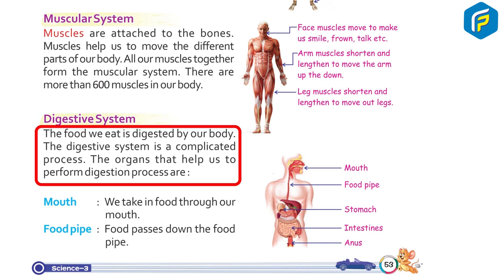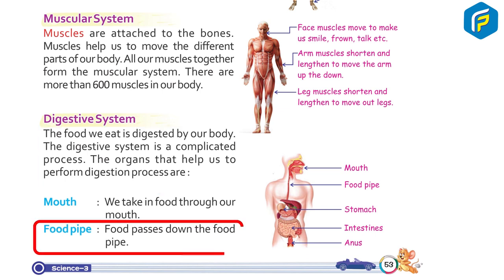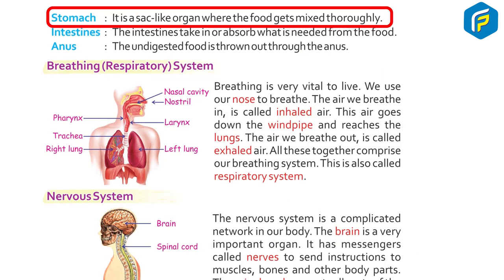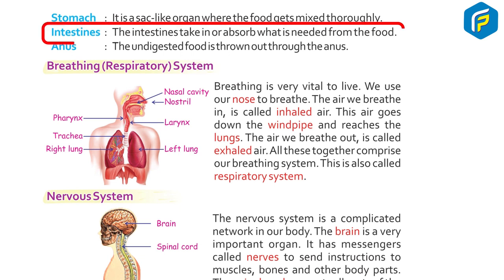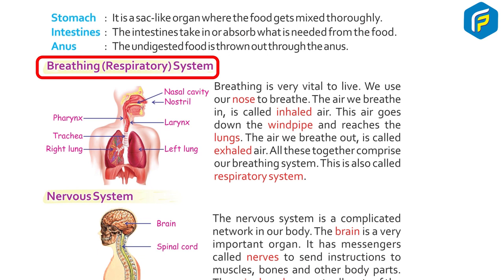The food we eat is digested by our body through the digestive system, which is a complicated process. We take in food through our mouth, it passes down the food pipe into the stomach — a sac-like organ where food gets mixed thoroughly. The intestines then absorb what is needed from the food, and the undigested food is thrown out through the anus.